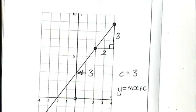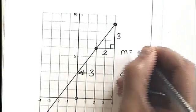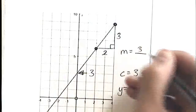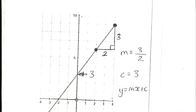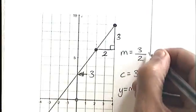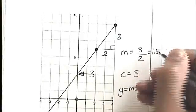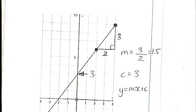Remember what we said about the gradient. The gradient is how far up divided by how far along. It's 3 over 2, which can also be written as 1.5. But I'm going to leave it as 3 over 2.